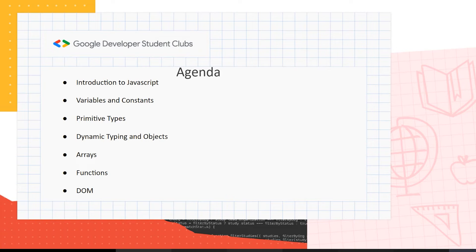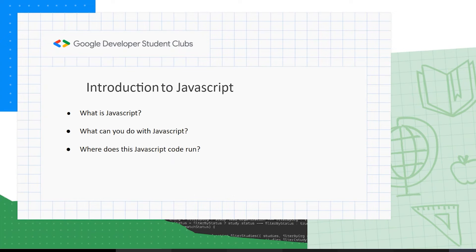then primitive types, dynamic typing, and objects; and finally arrays, functions, and the Document Object Model. So, what is JavaScript? JavaScript is basically a language that enables you to create dynamically updating content — a programming language that allows you to dynamically update websites.